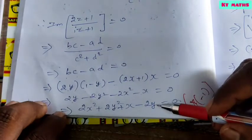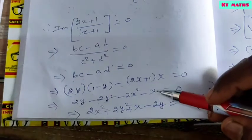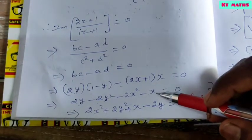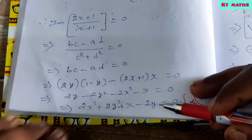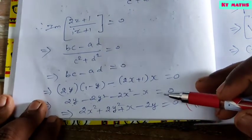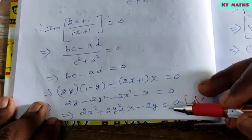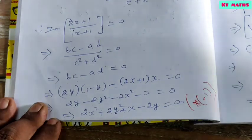After expanding and simplifying, multiplying through by minus 1, we get the required answer: the locus of z is 2x squared plus 2y squared plus x minus 2y equals 0.